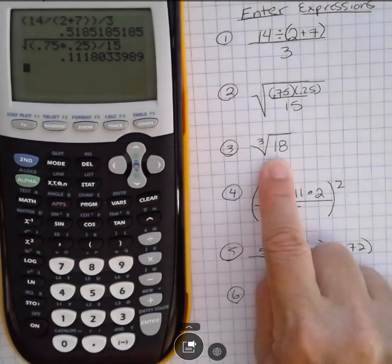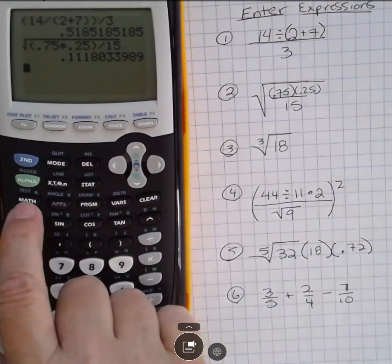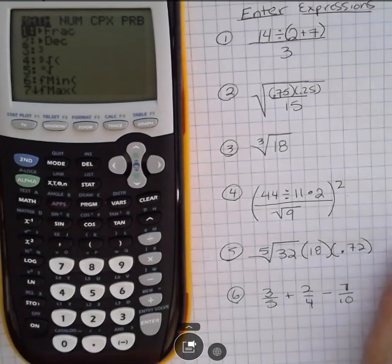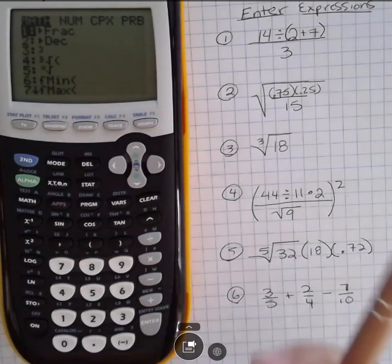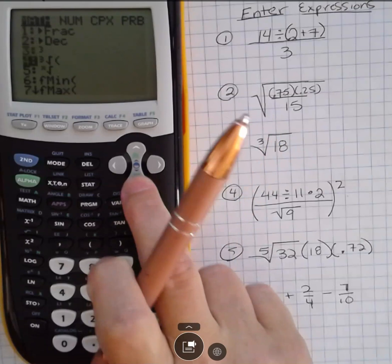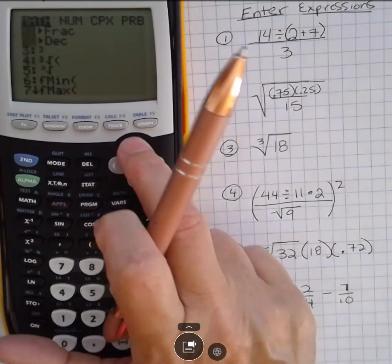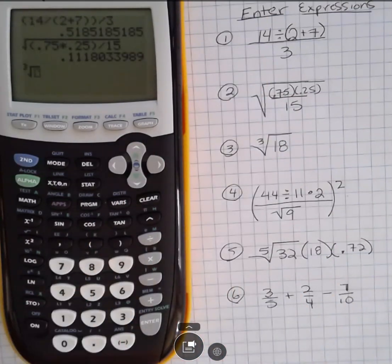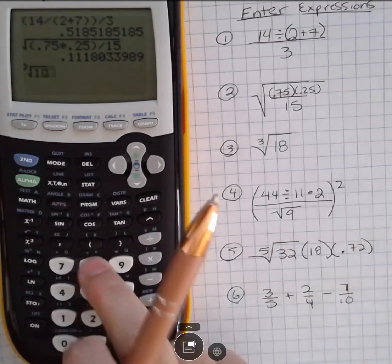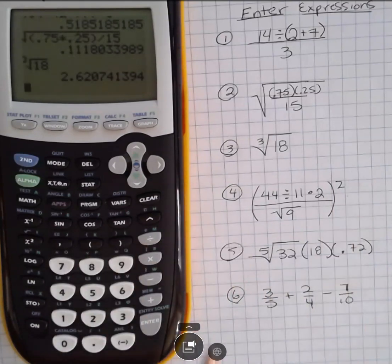In the next one, I want the cubic root of 18. The cubic root button is under math, and if you see here you can see it as number 4. You can use your buttons to go down to 4 and then hit enter, or you can just hit 4 on your calculator, and then enter 18 and hit enter and get your answer that way.